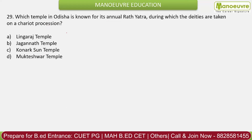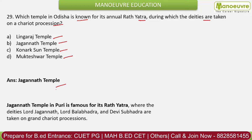Question 29: Which temple in Odisha is known for its annual Rath Yatra, during which the deities are taken on a chariot procession? Options: Lingaraj temple, Jagannath temple, Konark temple, Mukteshwar temple. The correct answer is Jagannath temple. The Jagannath temple in Puri is famous for its Rath Yatra of Lord Jagannath, Lord Balbhadra, and Devi Subhadra. The Lingaraj temple is in Bhubaneswar, and the Konark temple is also in Odisha — it is a sun temple also known as the Black Pagoda.